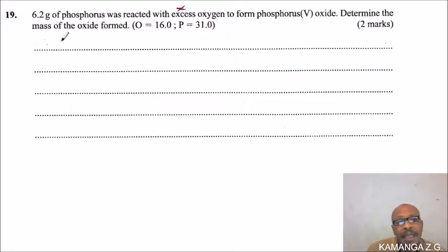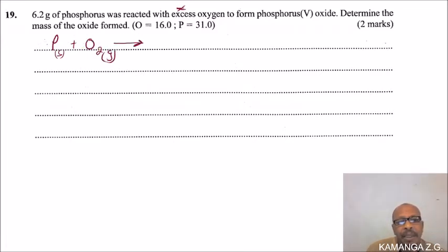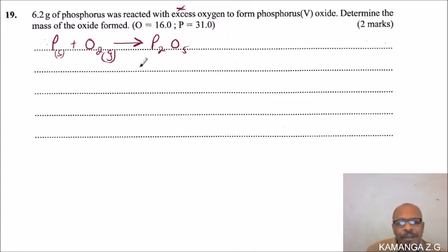To solve this, we need to form the equation for the reaction. We have phosphorus, which is solid, added to oxygen, which is a gas, and this gives phosphorus oxide — P₂O₅ is the formula for phosphorus oxide. Now we balance the equation.